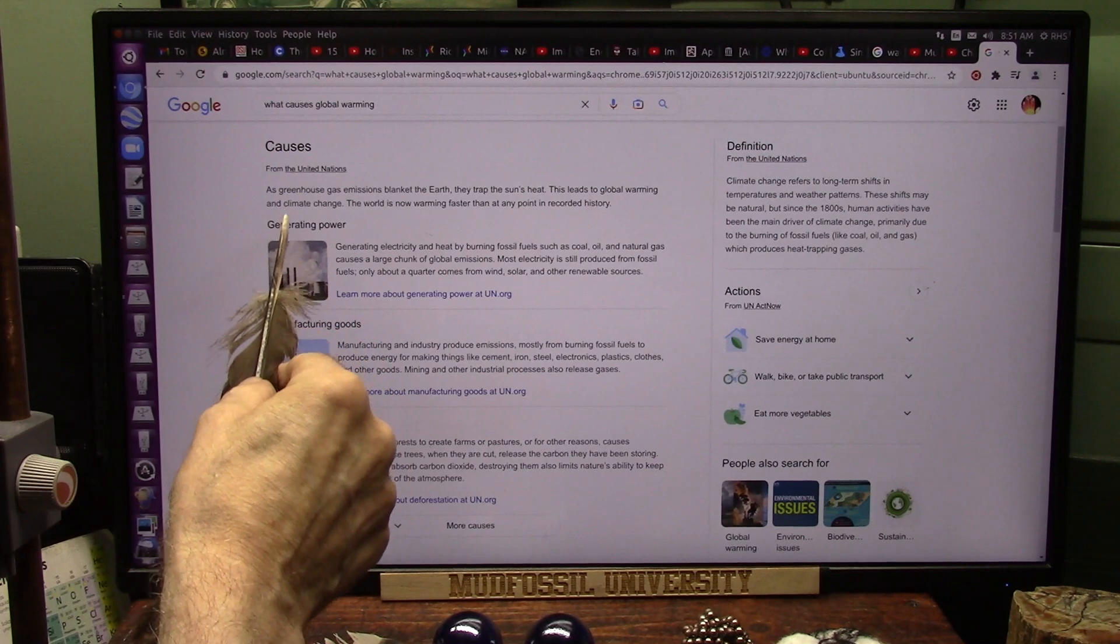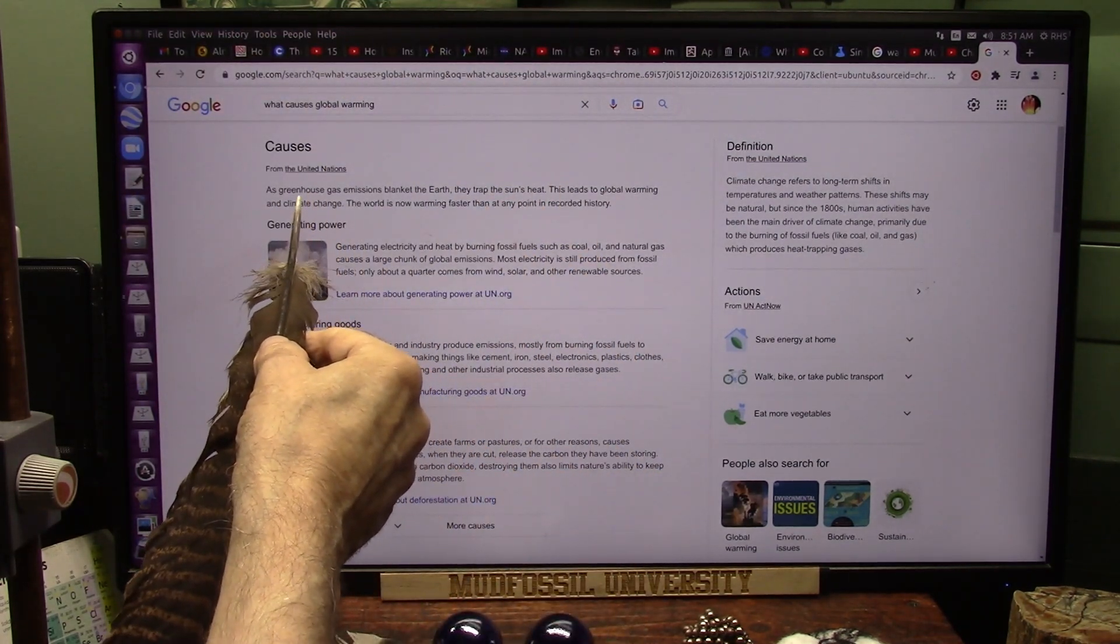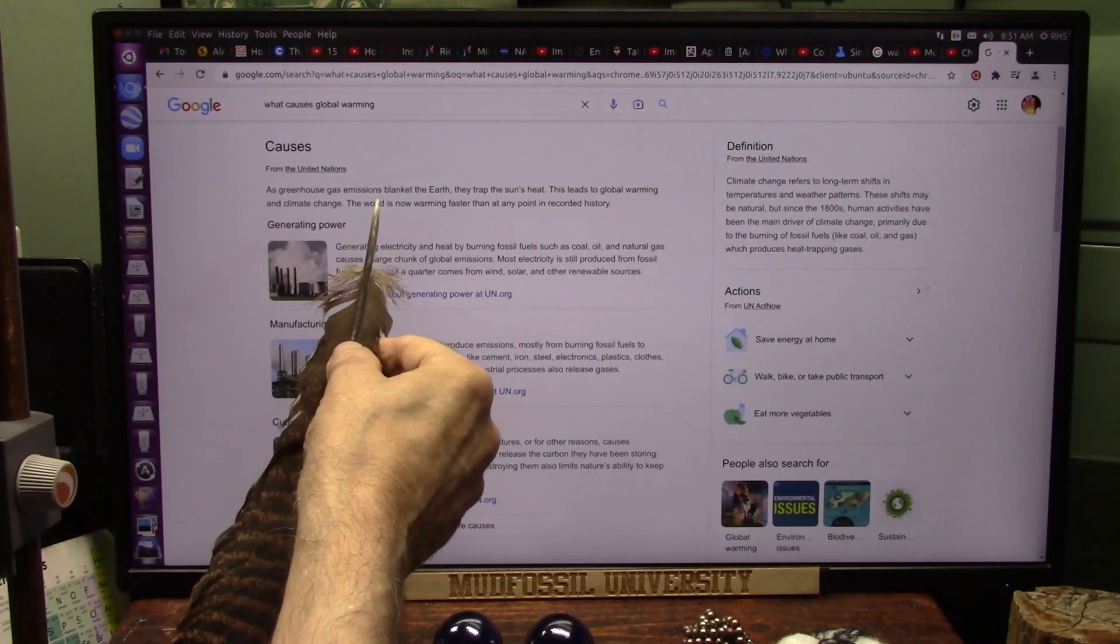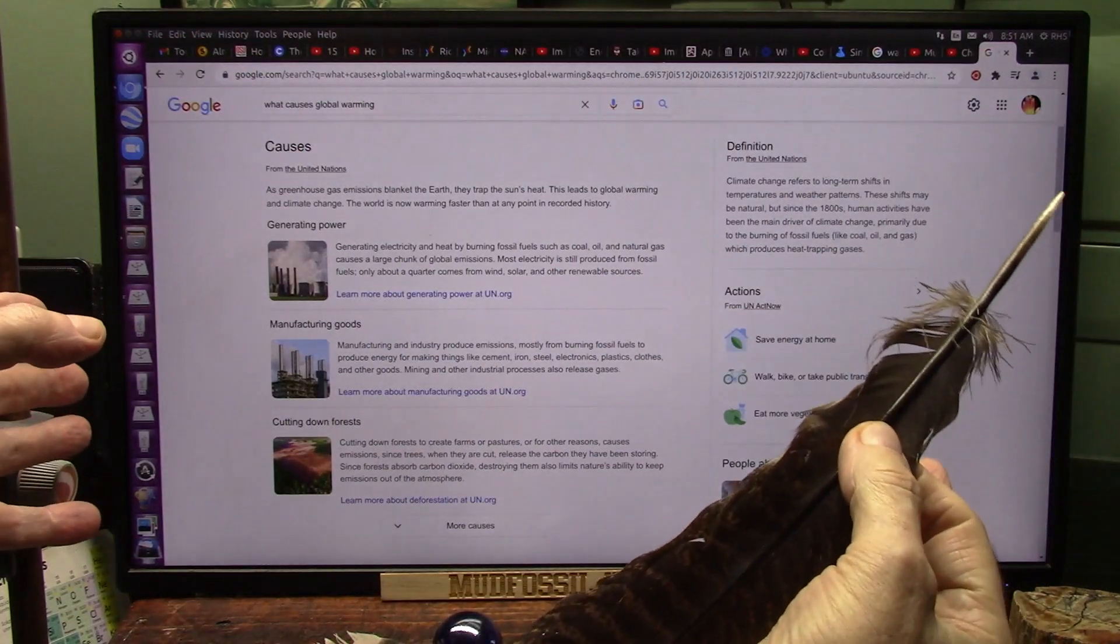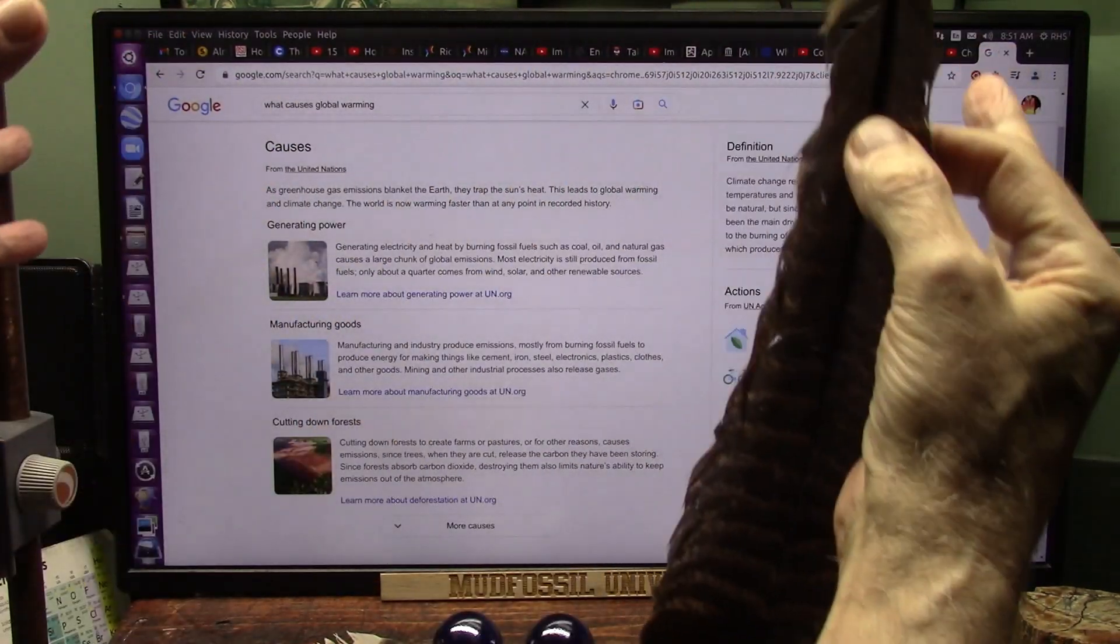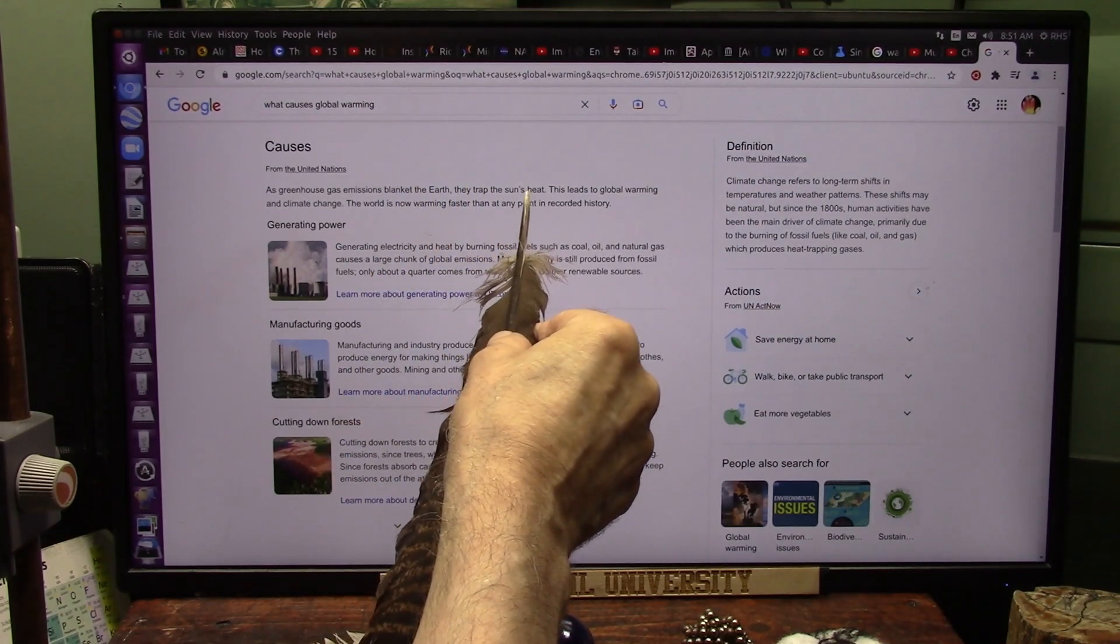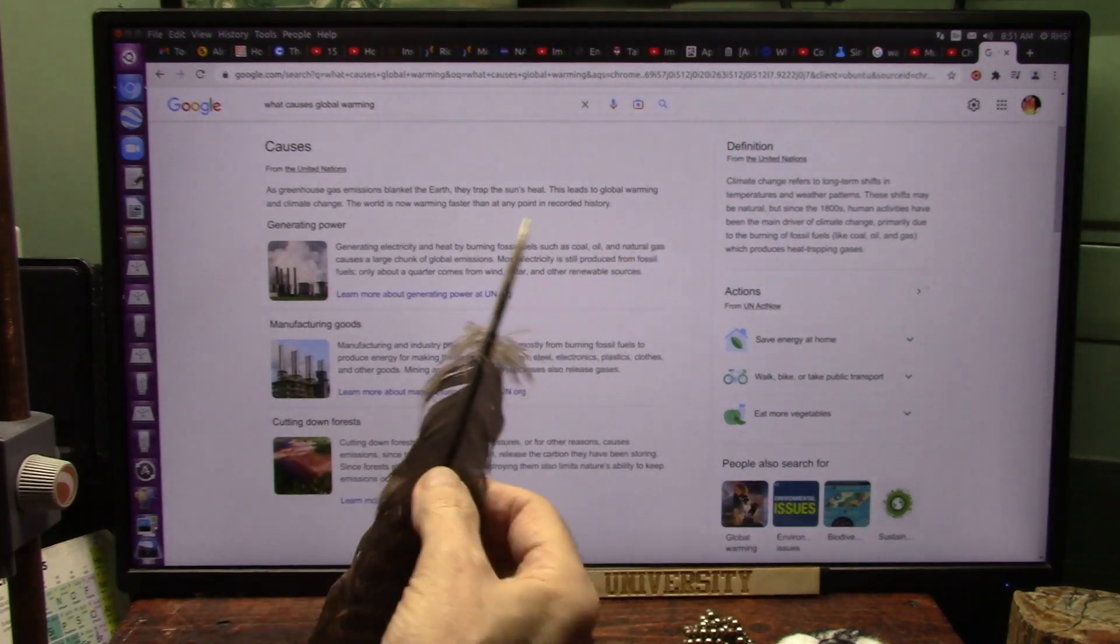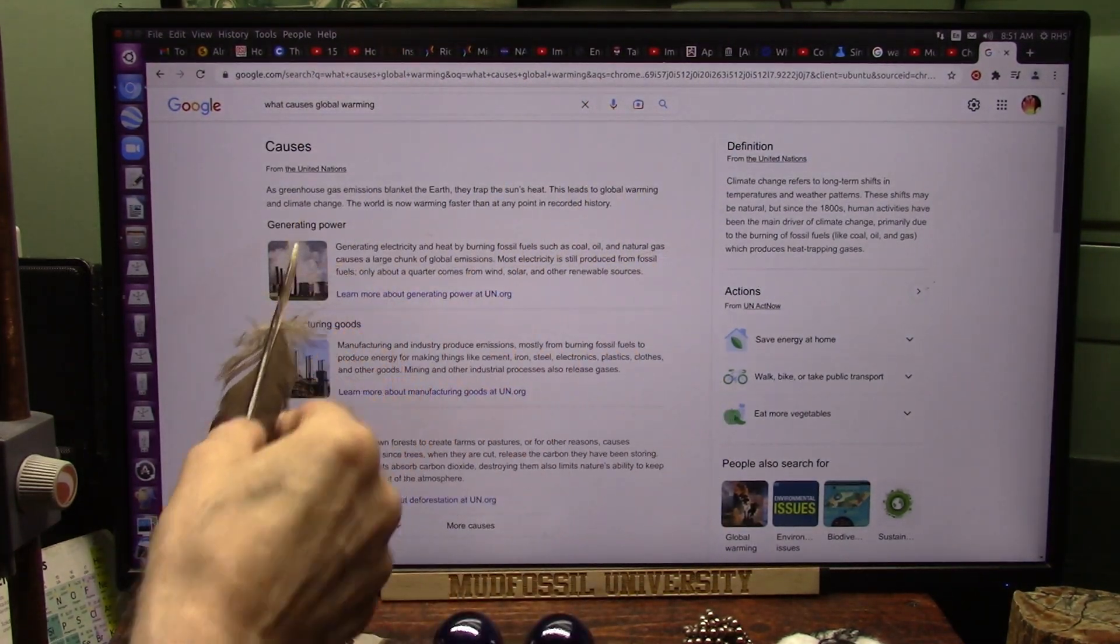They're talking about the causes of global warming being greenhouse gas emissions that blanket the earth. That's carbon dioxide. Greenhouse gases from burning things go into the atmosphere and they say they're blanketing the earth, trapping the sun's heat so it won't let it back out. That is not the case. That is not what leads to global warming.